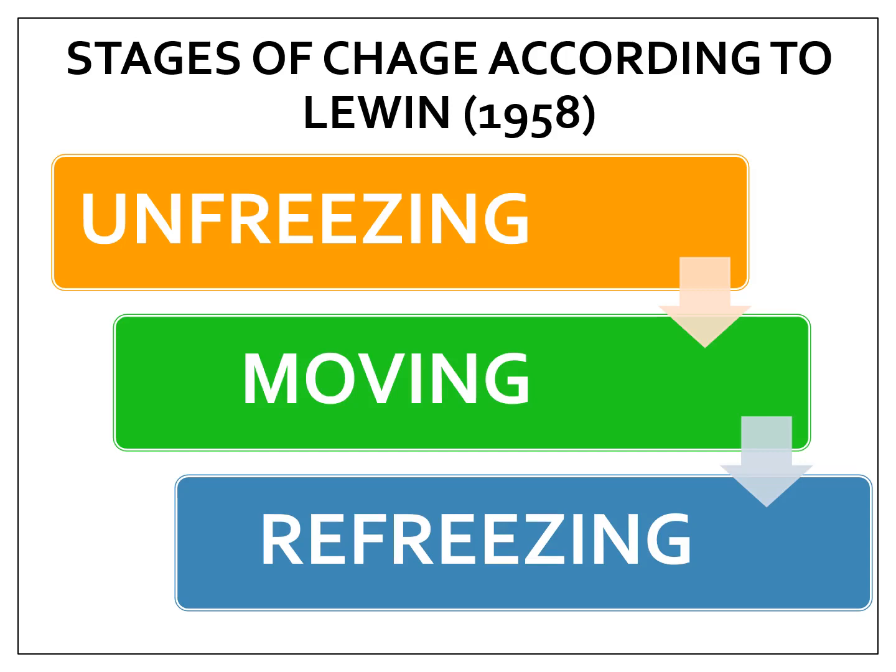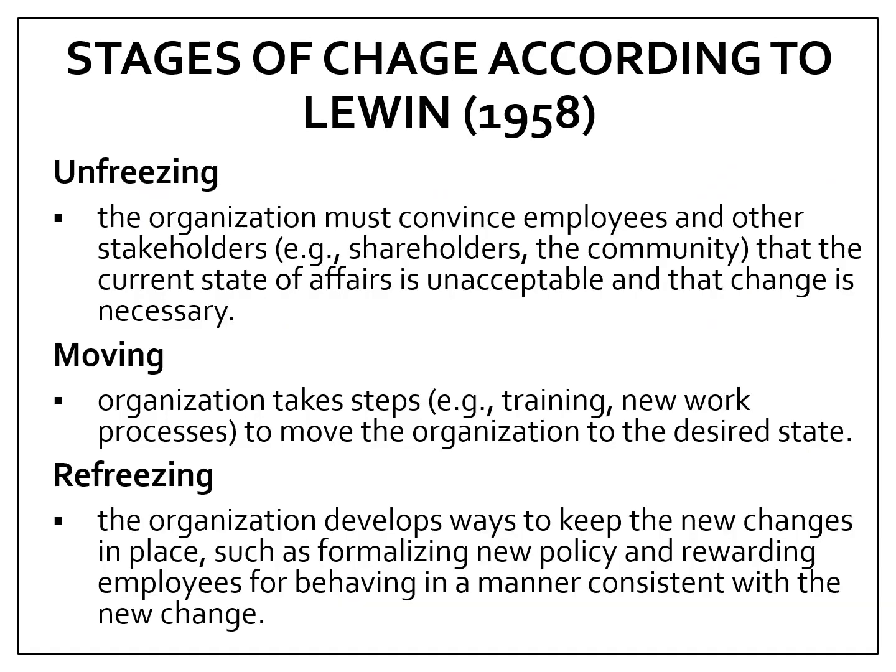Here is one theory of change, according to Kurt Lewin. According to him, there are three major stages in organizational change: unfreezing, moving, and refreezing. When we say unfreezing, this is the stage wherein organizations must convince employees and other stakeholders that the current state of affairs is unacceptable and that change is necessary.